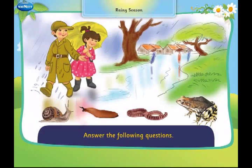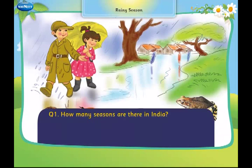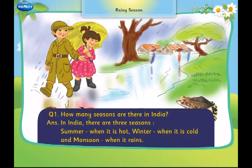Answer the following questions. How many seasons are there in India? In India, there are three seasons: summer, when it is hot; winter, when it is cold; and monsoon, when it rains.